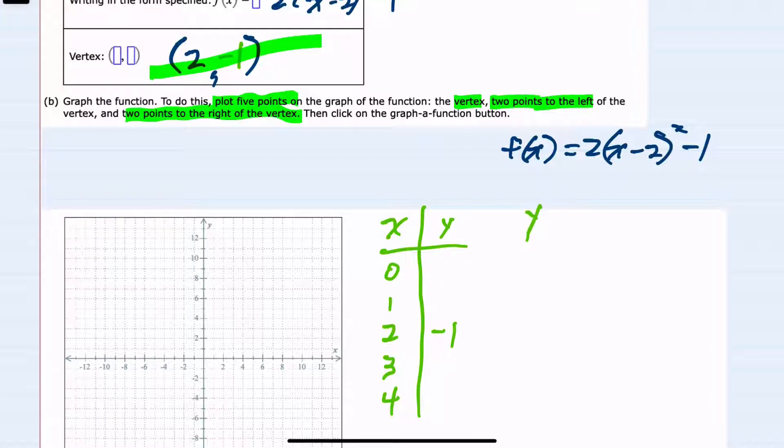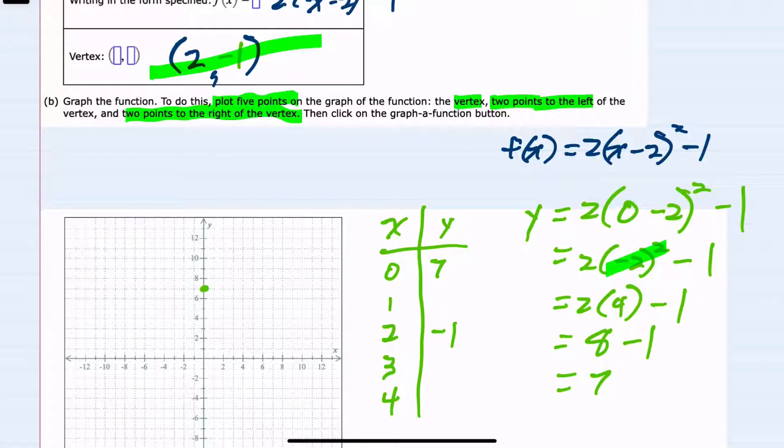I will start with the top value, 0. If I replace x in our formula with 0, we could simplify inside the parentheses. This would just be -2. Then we would have to move to the exponent. -2 squared would be 4. Then multiplication: 2 times 4 is 8. Combining those terms, we would have 7. So we have the point (0, 7). I'll go ahead and plot that on our graph.